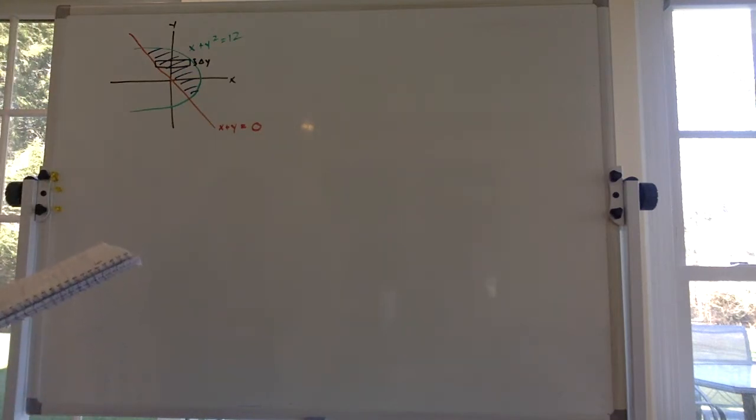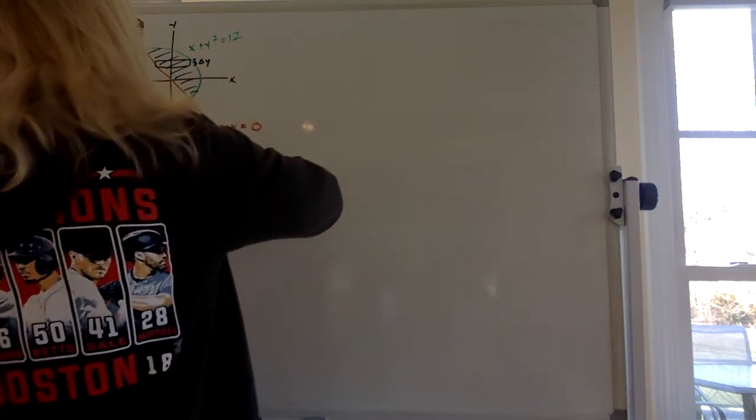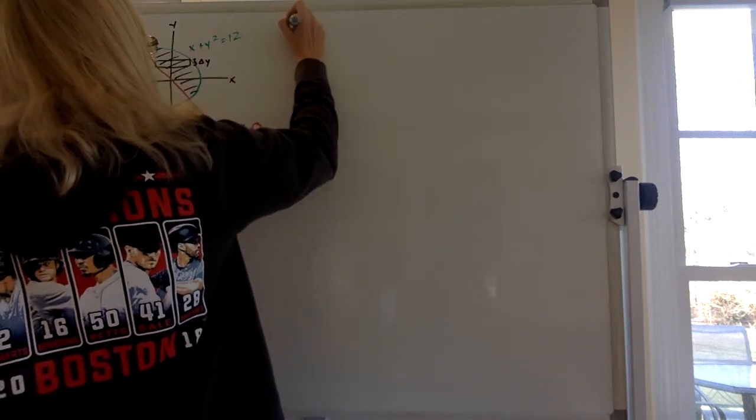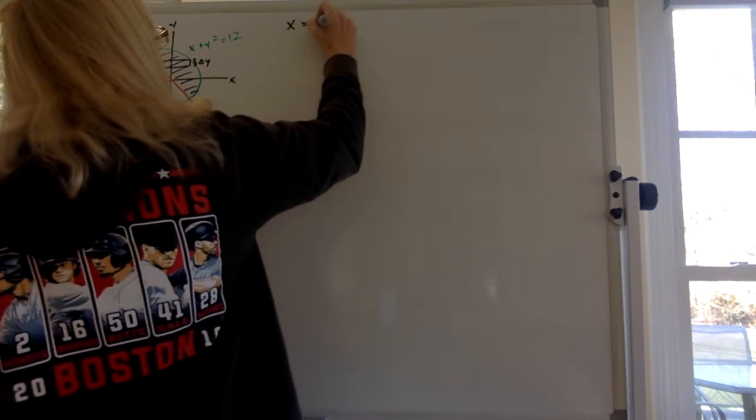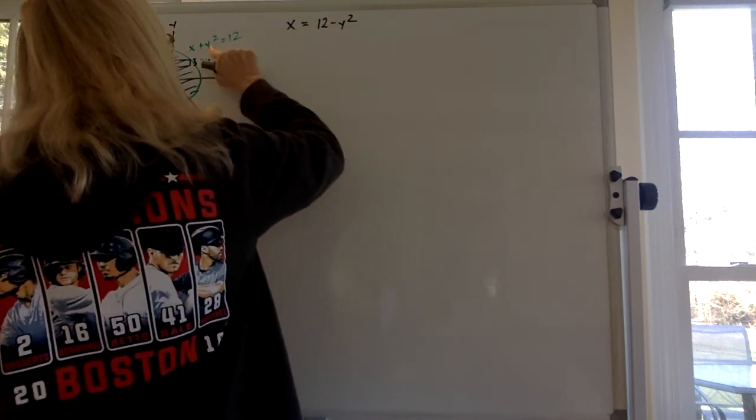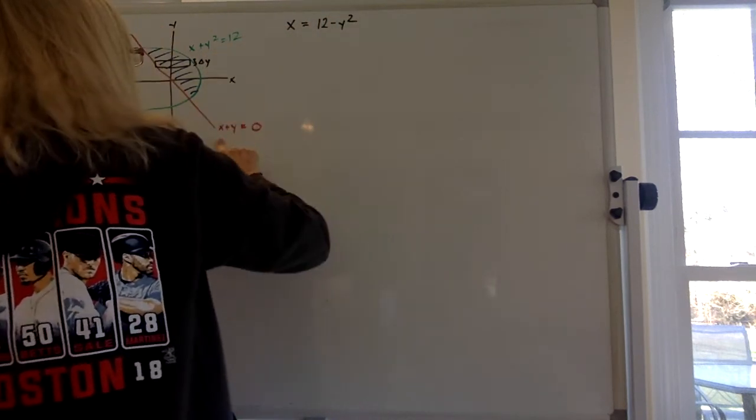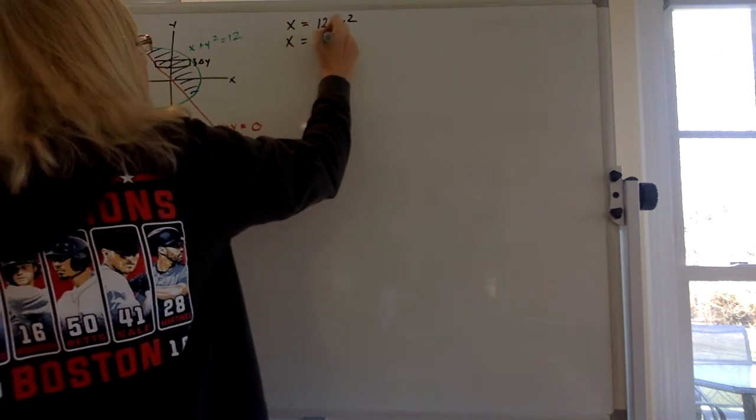Okay, so we're gonna do left right, we're gonna integrate with respect to y. So the first thing I want to do is to get my two equations in terms of that, like get an x equals. So first one x equals 12 minus y squared, so I subtract the y squared from both sides, and here x equals negative y.